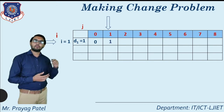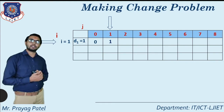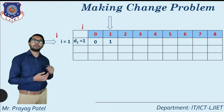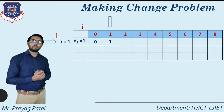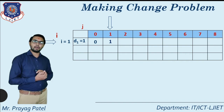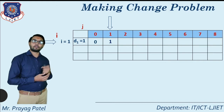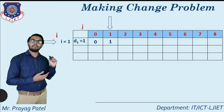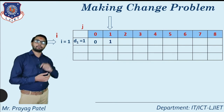Now move to the right side, consider location C[1][1]. Here only coin number 1 is available, meaning d1 equal to 1 is available, and we want to make change for 1. For making change for 1, only 1 coin is required. We put the value equal to 1.